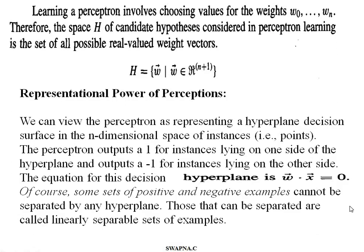Learning a Perceptron involves choosing the values for the weights. The candidate hypothesis space considered for Perceptron learning is the set of all possible real-valued weight vectors. It is represented as H, the set of weight vectors w belonging to the hypothesis space.